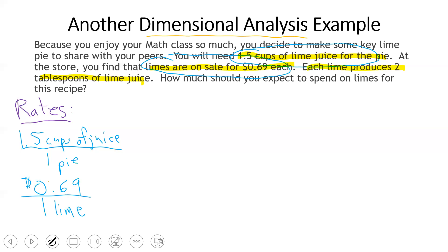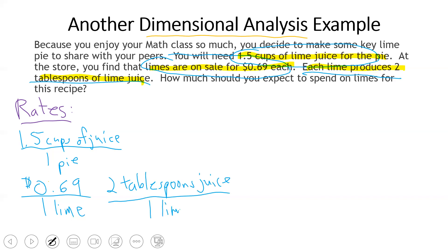69 cents each means 69 cents for one lime, or 69 cents per one lime. The last piece of information — each lime produces two tablespoons of lime juice — gives us the rate of two tablespoons of juice per one lime. Those are all of the rates in the problem.